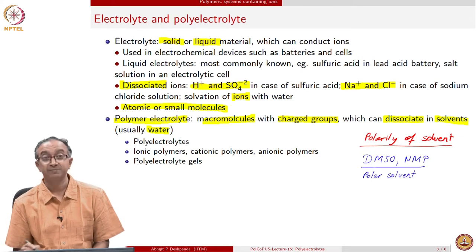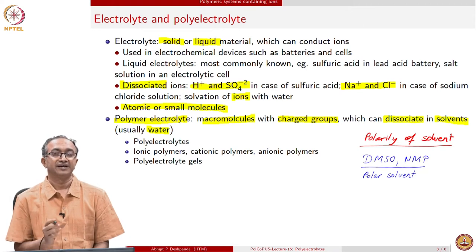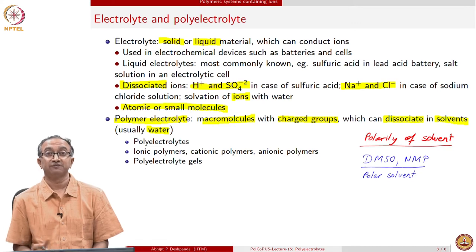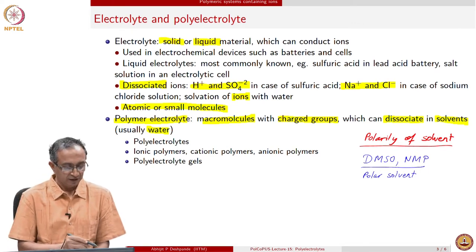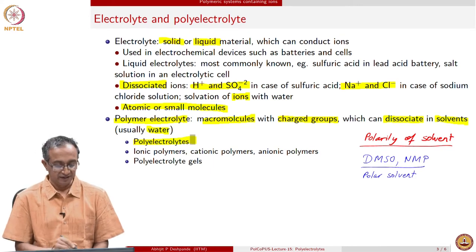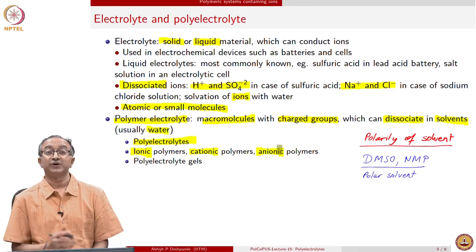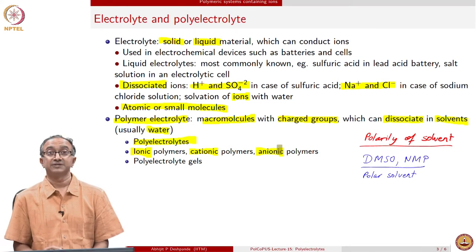Polarity indicates the presence of dipoles. If polymeric macromolecules also contain certain groups which can interact with the solvent, then interactions are possible. In case of polyelectrolytes, ionic species are present and they clearly interact with polar solvents. General terms used to describe polymers with electrolytic properties are polyelectrolytes, ionic polymers, and since we have positive or negative ions, we can have cationic polymers or anionic polymers. Anionic and cationic polymers are very useful in water treatment or in separation of molecules.